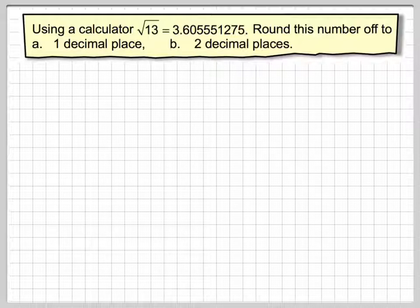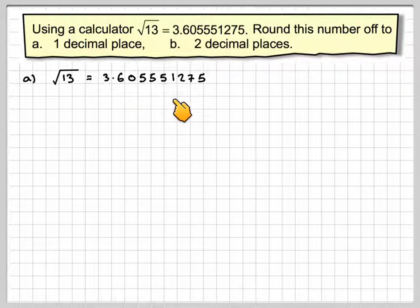Now there are several different ways of rounding off. In this video we're going to look at rounding off to decimal places, in particular one decimal place and two decimal places. So let's write down our number, square root of 13. You should always write down the full calculator value of any calculation, which is 3.605551275.